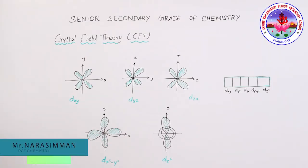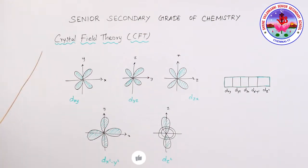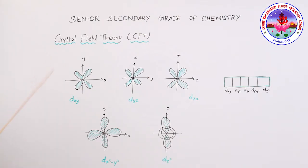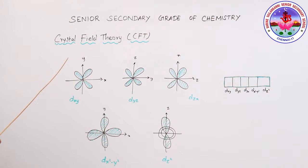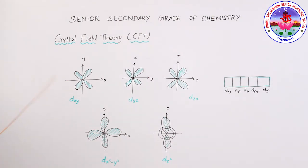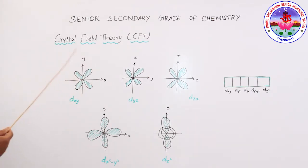Crystal field theory involves a purely electrostatic approach to the bonding in complexes. It was first applied to ionic-type crystals — crystalline substances — and is therefore called crystal field theory, or simply CFT. This theory considers the metal ion as being placed in an electrostatic field created by the surrounding molecules or ions. The electric field changes the energy of the D electrons in transition metal ions, and many properties of the complex are related to these energy changes. CFT considers the bonding in the complex to be entirely electrostatic.